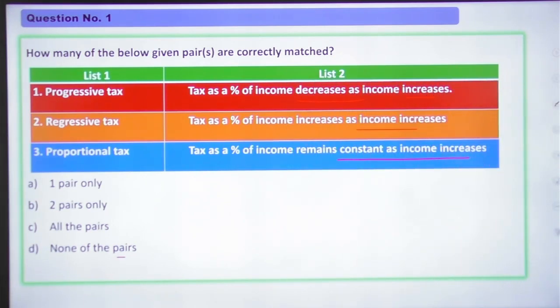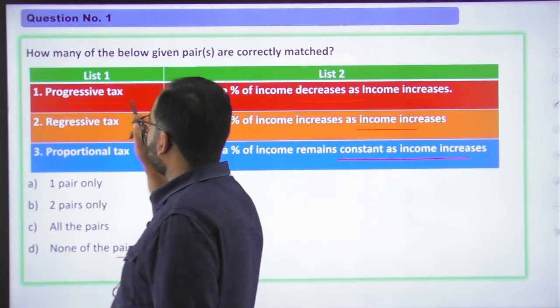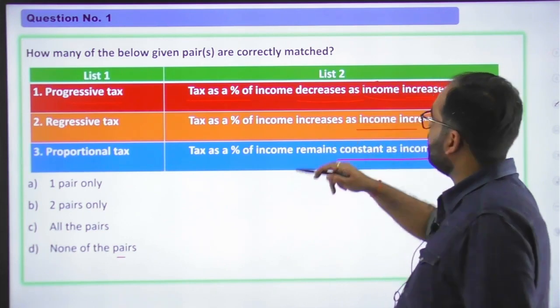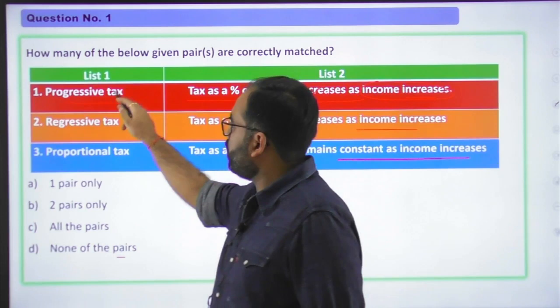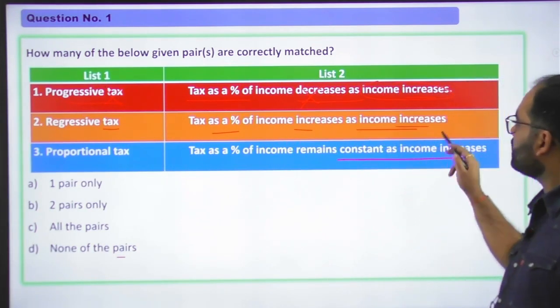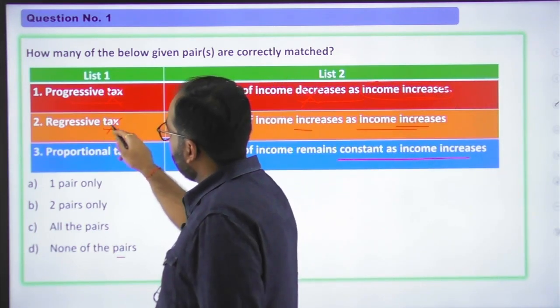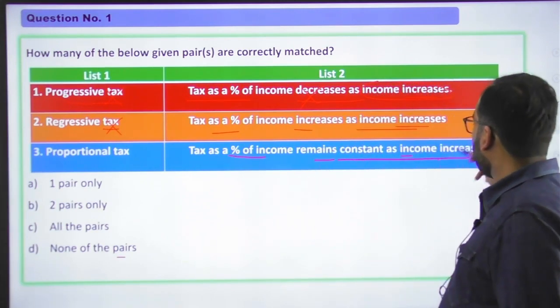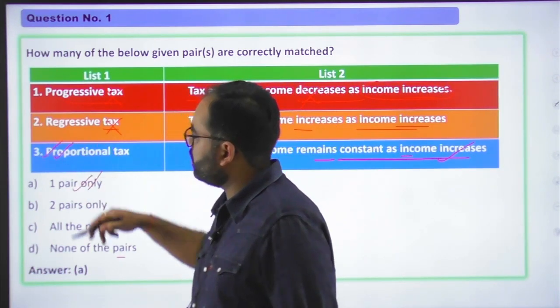So let's take a look at the differentiation. When we talk about progressive tax, it will not decrease. That will be incorrect. So first pair is not correctly matched. Second, regressive tax as a percent of income increases as income decreases, which means that this is also wrong. And last, proportional tax, the percent of income remains constant as income increases. That is fine. So answer will be A, that is only one pair is correctly matched, the third pair.